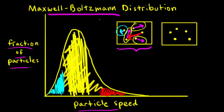From collision theory, particles must have enough kinetic energy to overcome the activation energy for a reaction to occur. We can draw a dashed line on the Maxwell-Boltzmann distribution representing the activation energy. You can think of the x-axis as kinetic energy — the faster a particle travels, the higher its kinetic energy. The area under the curve to the right of this dashed line represents all particles that have enough kinetic energy for the reaction to occur.